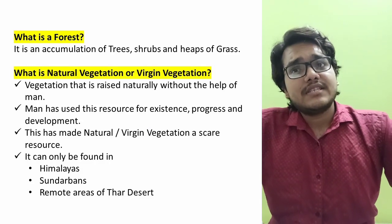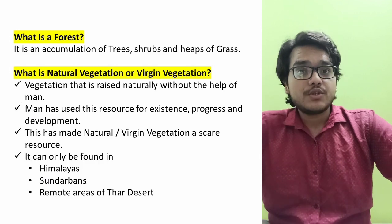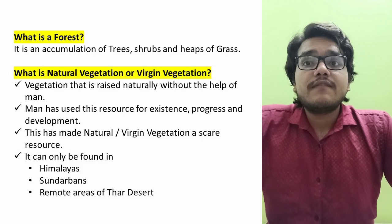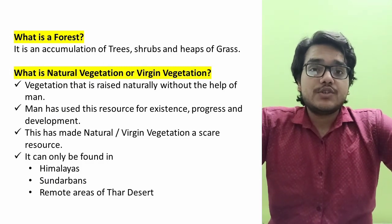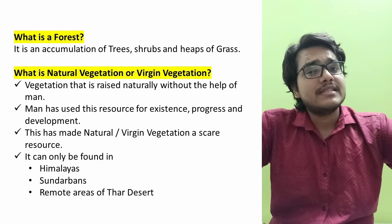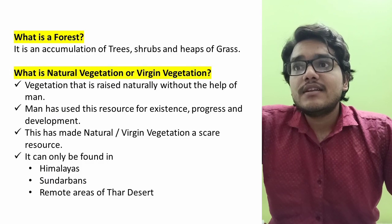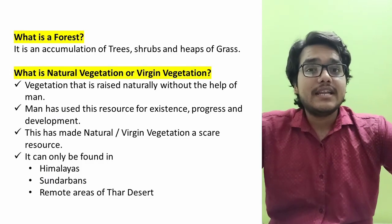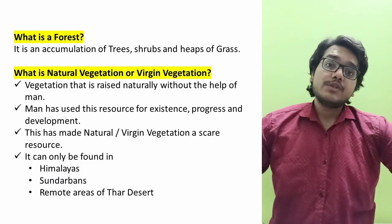For example, in the Himalayas, where heights are greater and some areas have no human settlement, the wild trees there represent natural or virgin vegetation. Similarly, in the delta of the Brahmaputra and Ganga, we find mangrove forests, which are very thick and in tidal areas with no human presence. The third example is the Thar Desert, which is very warm, has no water, and the vegetation found there is also natural vegetation.